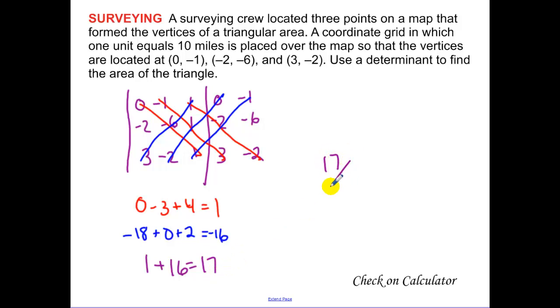We have a value of 17 over 2, which is 8.5, because you have to do one half the determinant to get your area. I'll go through this example on the calculator.